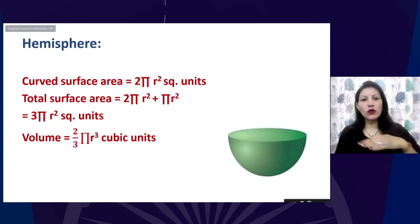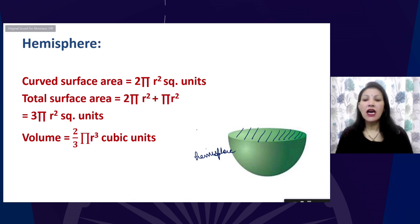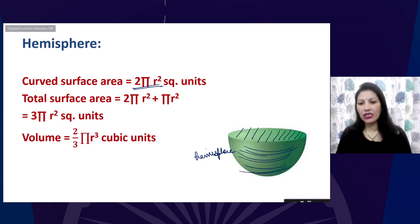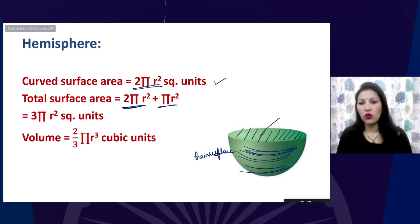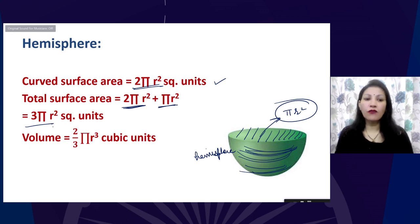If you cut a sphere exactly through its middle into two equal parts, each part is known as a hemisphere. The curved surface area of a hemisphere is 2πr², and for the total surface area you add the flat circular top (πr²), giving 3πr². The volume of a hemisphere is (2/3)πr³.